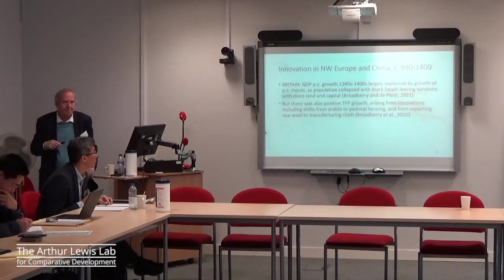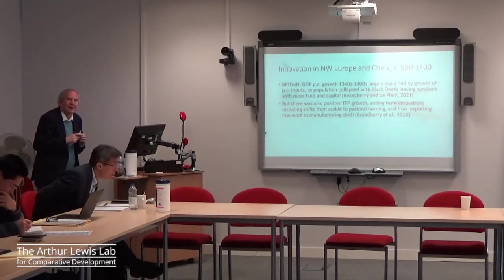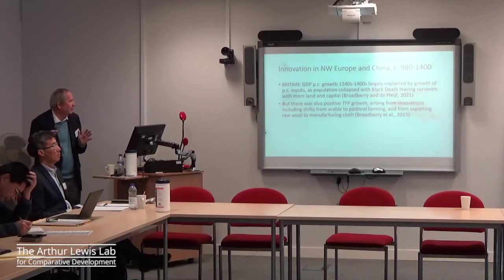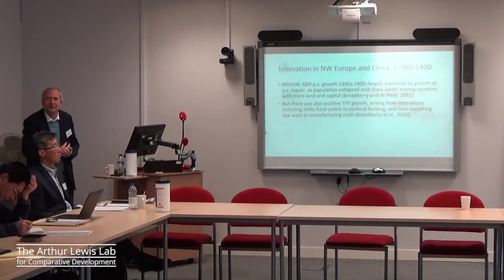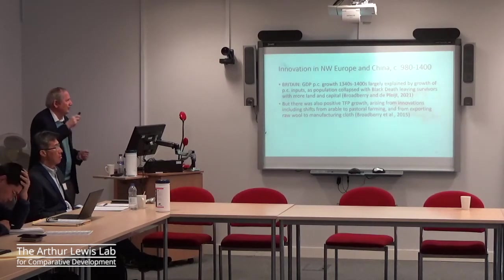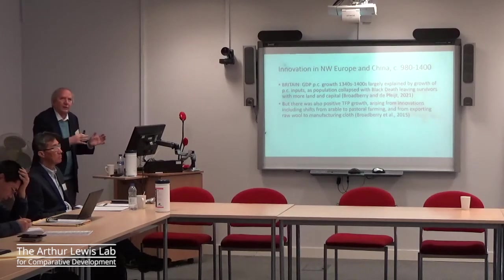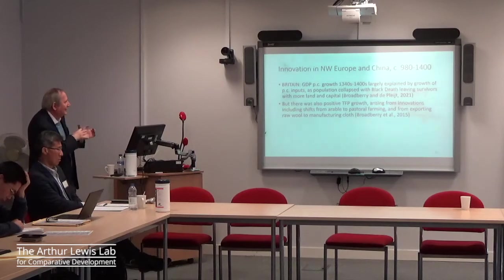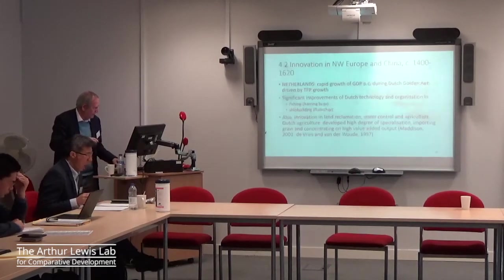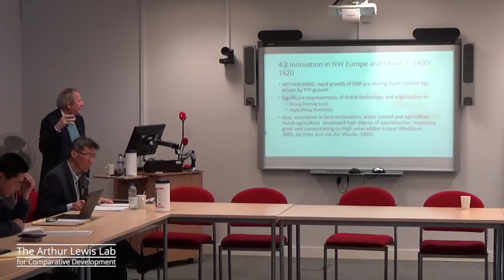In Britain, we get post-Black Death growth in GDP per capita. Part of it is explained by the lottery-win effect — you survived, you got more land, more capital. But there is also a role for TFP. How are inputs being used more efficiently? Not through great new inventions, but through structural shifts within agriculture — from arable to pastoral farming, and instead of exporting raw wool, manufacturing it at home into cloth and becoming a major cloth exporter.